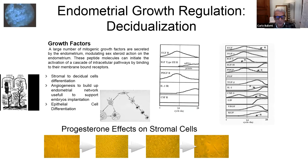Progesterone acts through a thousand growth factors that depend on its own adequate production. Here you can see in vitro the cell culture of mesenchymal cells going to the stromal cell. Without the stromal cell that enlarges its shape and starts to produce a lot of protein, there is no decidualization, there is no pregnancy, there is no continuation of pregnancy.